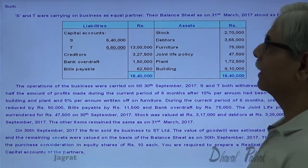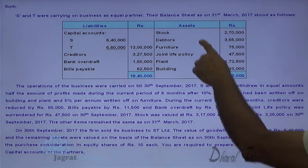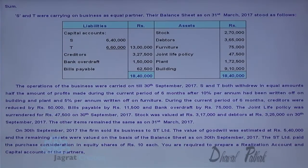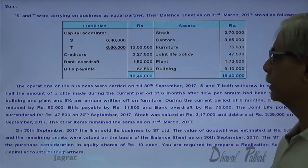S and T were carrying on business as equal partners. Their balance sheet as on 31st of March 2017 stood as follows. On the asset side, the assets are stock, debtors, furniture, joint life policy, plant, and building. Capital accounts of S and T total 13 lakhs, creditors 3 lakhs, 27,500 bank overdraft, and bills payable. This is the balance sheet as on 31st March 2017.